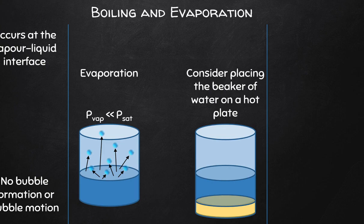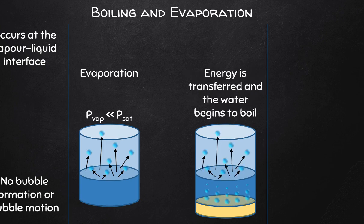Boiling, on the other hand, occurs under different conditions and requires a hot surface below. Energy transfer to the liquid allows the liquid to reach a saturation pressure so that bubbles will start to form at the solid-liquid interface where the heat is being added — whether at the base, around a tube, or wherever the energy is coming from.